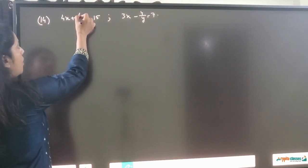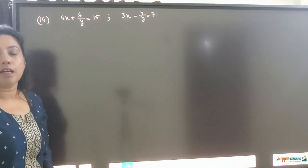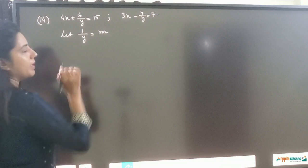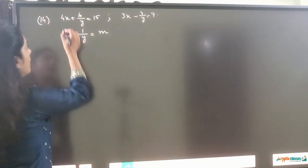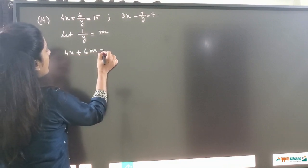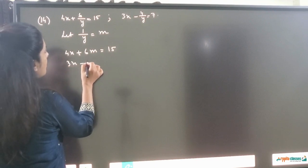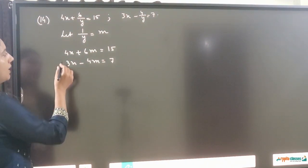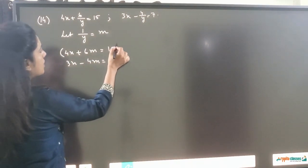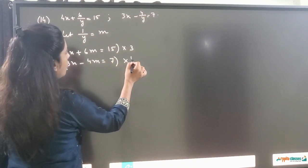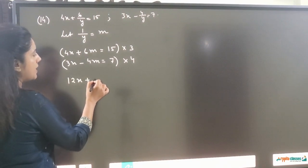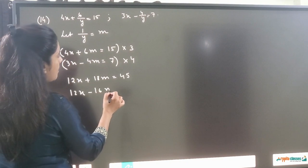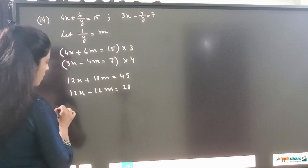Question number 14: 4x plus 6 upon y is equal to 15. Here the variable is in the denominator. In this case we consider 1 upon y is equal to a new variable m. So the first equation becomes 4x plus 6m is equal to 15, and the second equation becomes 3x minus 4m is equal to 7. We multiply the first equation by 3 and the second by 4, getting 12x plus 18m equals 45 and 12x minus 16m equals 28.